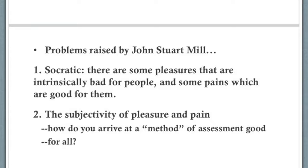Student: During the time of slavery, utilitarianism would not have even taken into account the pleasure or pain of slaves? Instructor: No, not unless some genius utilitarian decided to make the argument. The weakness of utilitarianism is that you could just as easily make the argument for slavery using the utilitarian method — you can say this benefits most people, and they are the minority. And it can be combined with whatever other scientific point of view you want. At this time, racism was being supported by what people claimed was scientific evidence.